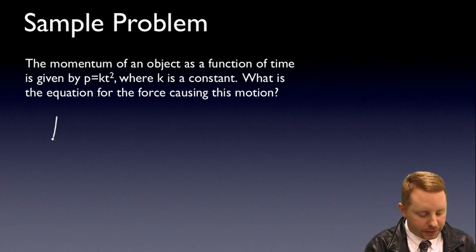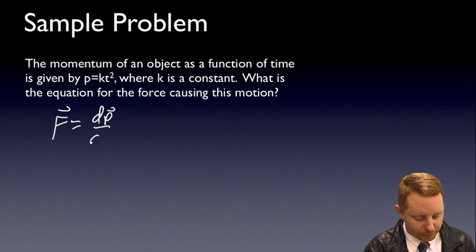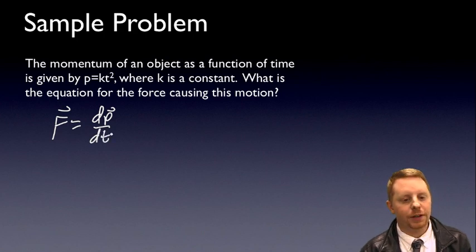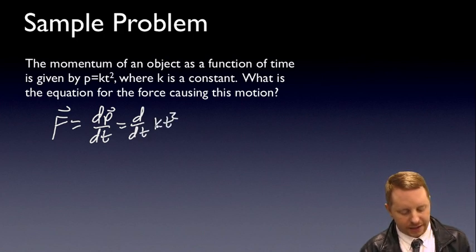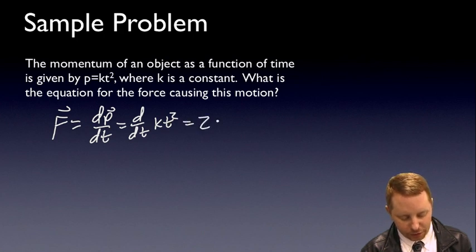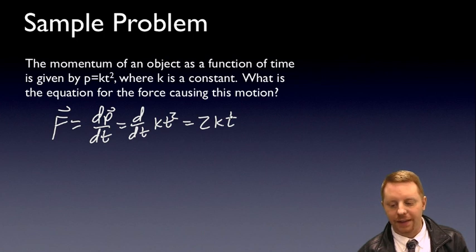Well, let's go right to force equals the derivative of momentum with respect to time. And if we worry just about magnitudes, not about directions, that'll be the derivative of kt squared. Since k is a constant, the derivative of kt squared is just going to be 2kt. There's the force that must have acted upon that object as a function of time.